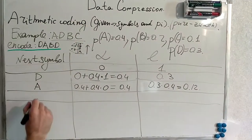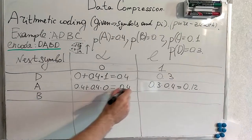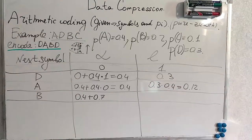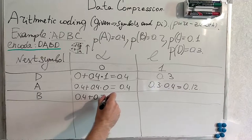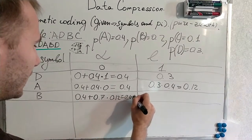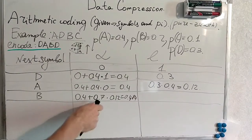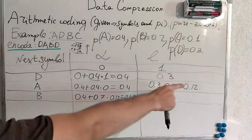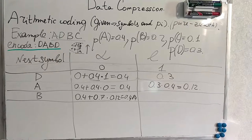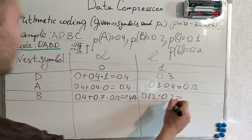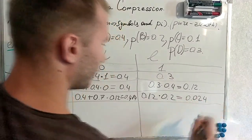Now one more symbol. B. We take previous alpha plus 0.7. This is the sum of probabilities for B. Multiplied by 0.12 by L from here. And this actually equals 0.484. We have taken previous alpha and summed this by multiplication of the all probabilities of the symbols coming up to the current symbol to B. And multiplied with L from the previous step. So to update L we use 0.12 multiplied by 0.2 which equals to 0.024.